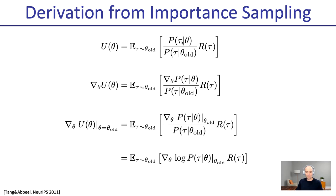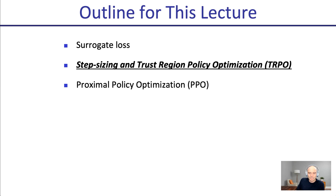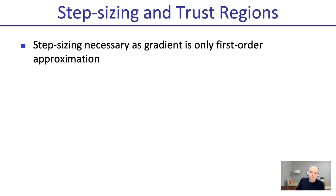We're going to keep that surrogate loss around and do more with it, including more with our step sizing. Step sizing is necessary because the gradient is only a first-order approximation and gives you a direction that is locally good — but that doesn't mean you should step infinitely far in that direction. So how far should you go?